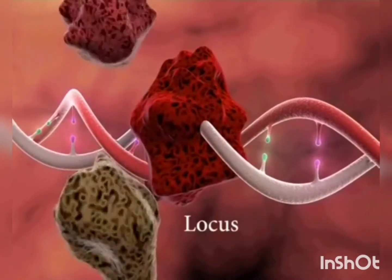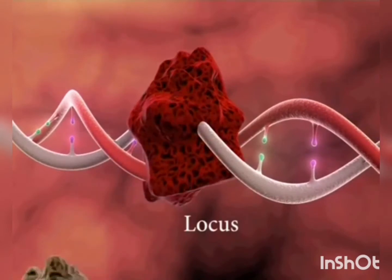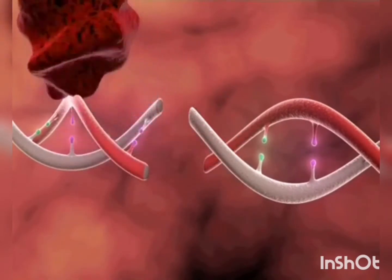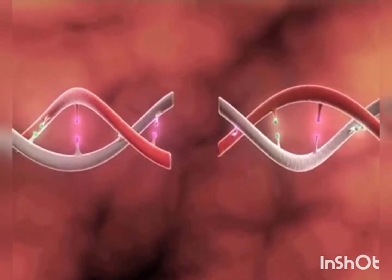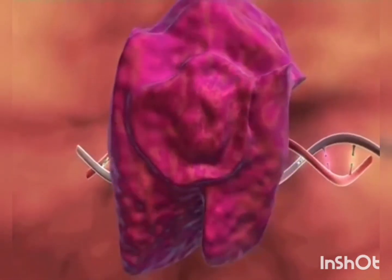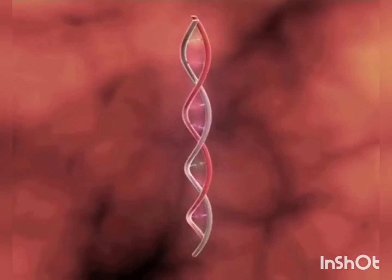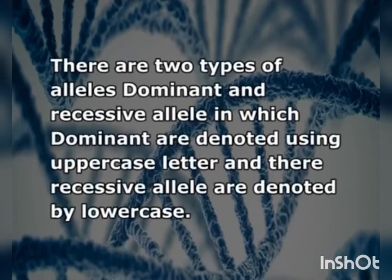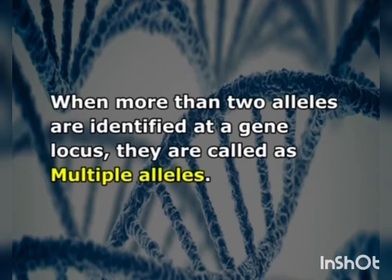All allelic forms of a gene are found at corresponding positions on similar homologous chromosomes. The allele most common in the native population is referred to as the wild-type allele. The alternative form, rarely observed, is called a mutant. There are two types of alleles — dominant and recessive — where dominant alleles are denoted using uppercase letters and recessive alleles by lowercase. When more than two alleles are identified at a gene locus, they are called multiple alleles.